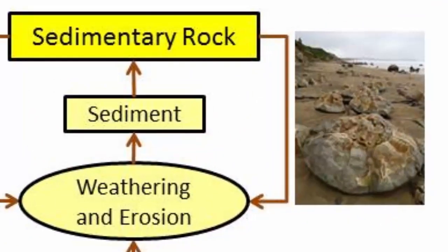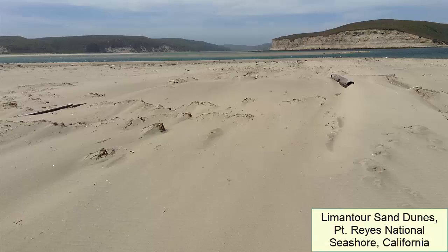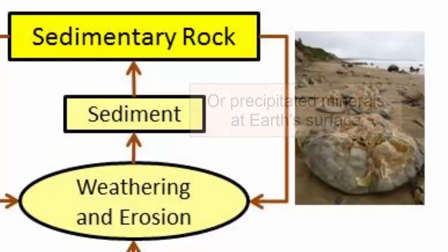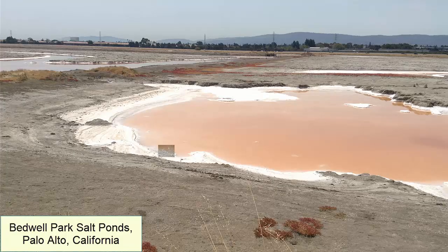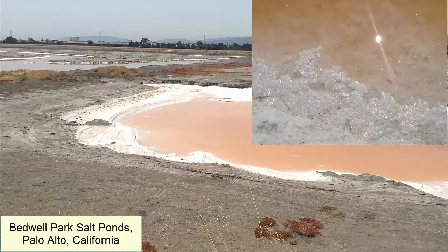Sedimentary rocks are those formed from the compaction or cementation of debris that is collected in low-lying areas on Earth's surface, like sands buried in sand dunes, or rocks that form through the precipitation of minerals from fluids at or near Earth's surface, like when seawater evaporates and salt crystals are left behind.